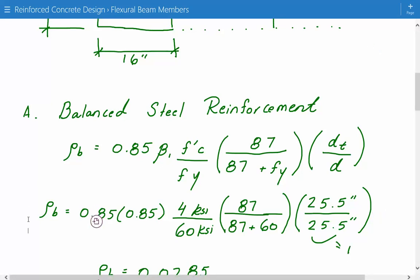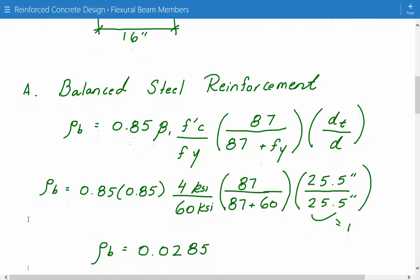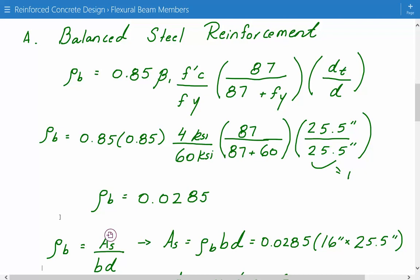Now it'll make more sense where ρb is. ρb is equal to the area of steel divided by the effective cross-sectional area. The effective cross-sectional area is equal to the width times D. We don't do the width times total height because everything below the steel is considered not very effective, so we just say B times D.